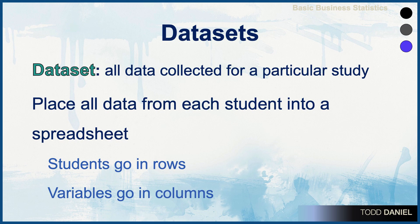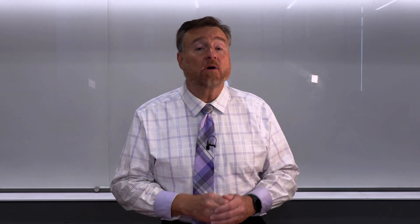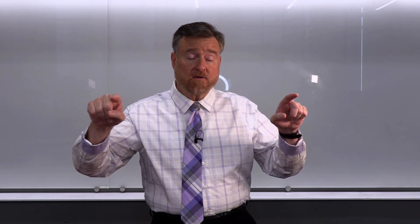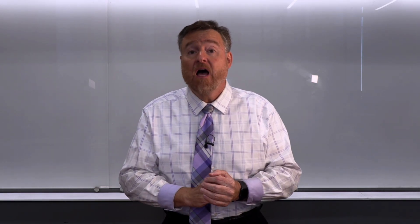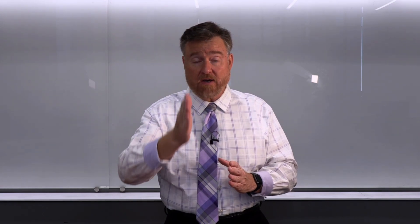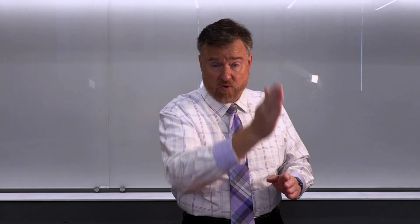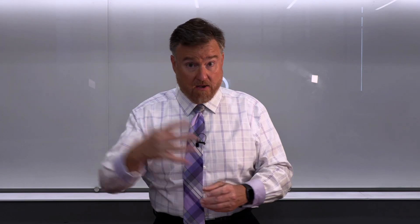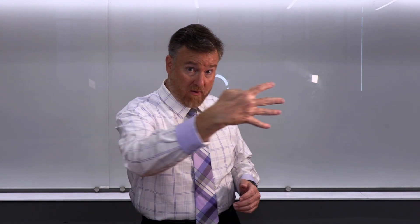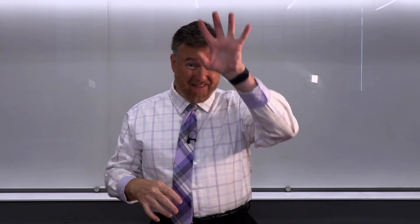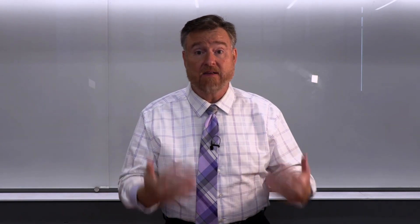Students' information will go into rows, and the variables will go into columns. If we were looking at a data set, we could look across the row to find your information, or we could look down a column to find everyone's information about their height, weight, and all the rest of the variables that we have collected. So the scores for the people all go in rows for each individual, and the variables will be located in the columns.